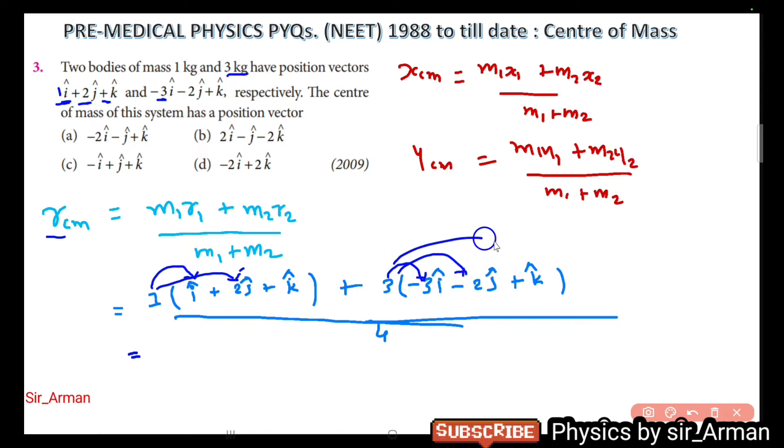And also you have to multiply this 3 with all these numbers. And then you have to add—you can add like you have to add just i with i, j with j, and k with k. You cannot add i and j. So you can add all the numbers with numbers, i with i, j with j, and k with k.